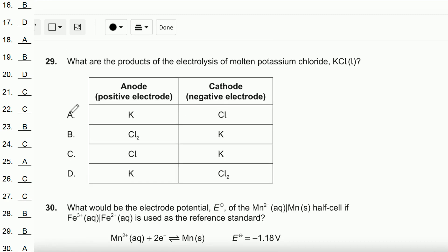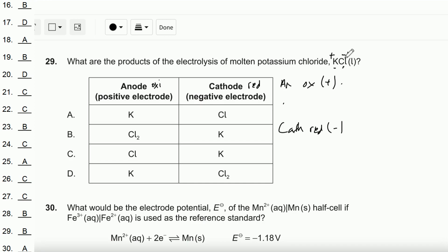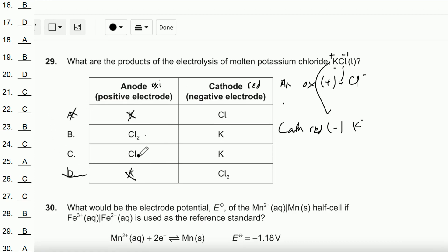Question number 29: What are the products of the electrolysis of molten potassium chloride (KCl)? The anode is oxidation (positive) and the cathode is reduction (negative). Cl⁻ is the negative ion, so it goes to the anode and is oxidized. K⁺ goes to the cathode and is reduced. Cl is a diatomic molecule (Cl₂). Therefore the answer is B.